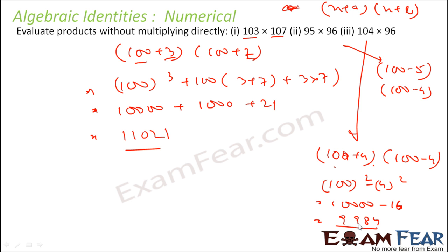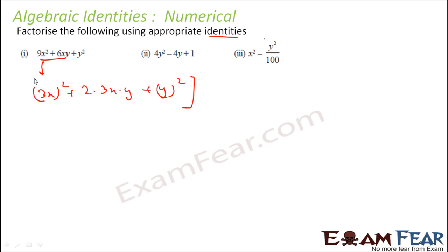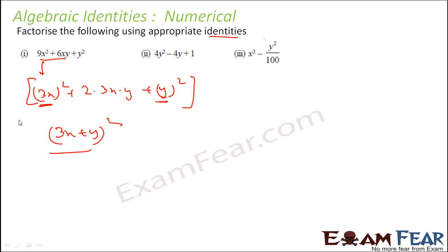Now we have to factorize a few more expressions using appropriate identities. If you see 9x² + 6xy + y², we can write 9x² as (3x)² and 6xy as 2×(3x)×y, and y². This fits the pattern of (a + b)² = a² + 2ab + b², so this is nothing but (3x + y)². Just by seeing the pattern, we can factorize in one step.